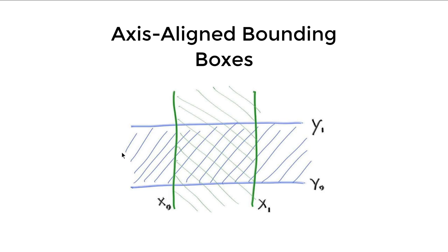The idea is we have an axis-aligned box - because it is axis-aligned without any rotation, it is very easy to specify with just two points: the lower-left corner minimum point and the maximum point upper-right corner. This is a two-dimensional demonstration of the axis-aligned bounding box, but the same idea easily extends into three dimensions.